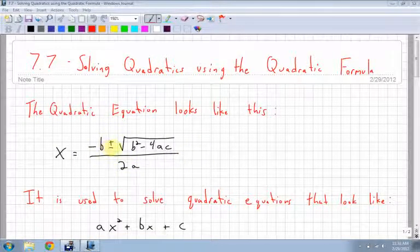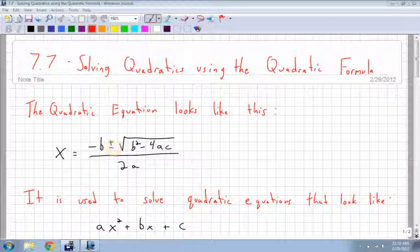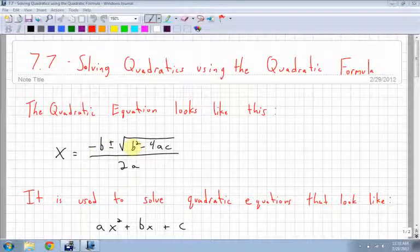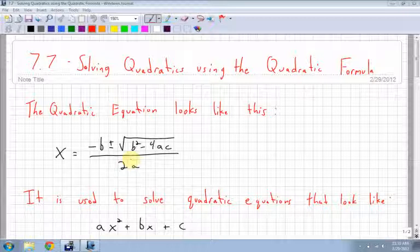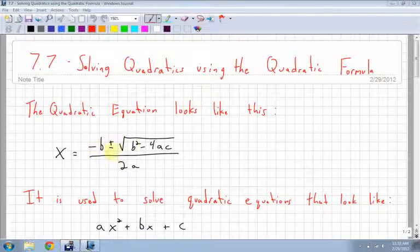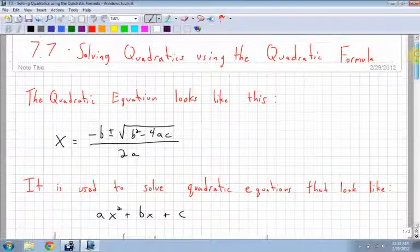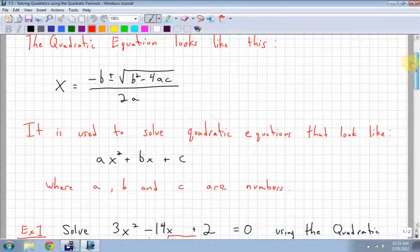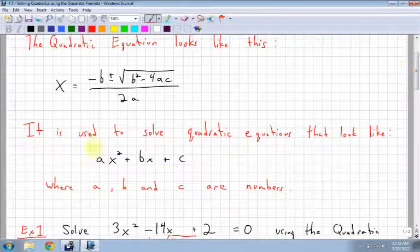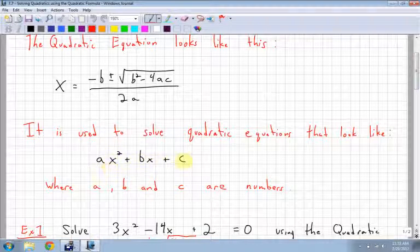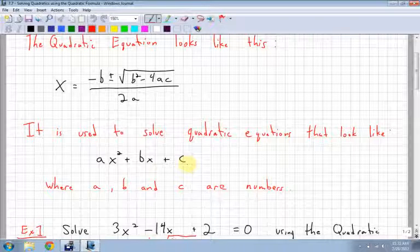x equals minus b plus or minus the square root of b squared minus 4ac all over 2a. So it doesn't totally fit because the bottom is a little bit weird, but you get the idea. It's a good way to remember it. So this is the quadratic formula. Notice this little plus or minus bit. That means you're gonna have two answers.